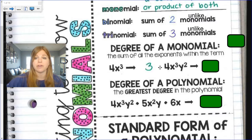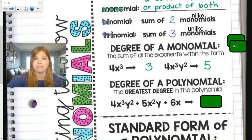However, if I have 4x cubed y squared, the way I find the degree here is I take the sum of the exponents. 3 plus 2 and the degree would be 5. So this first term has a degree of 3. The second monomial here in my example, 3 plus 2 gives me a degree of 5.